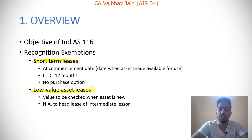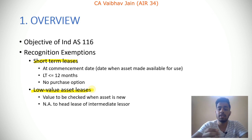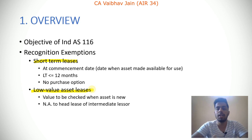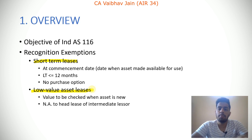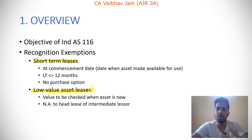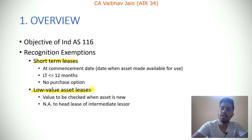The second exemption is for low-value asset leases. Here the lessee has to check whether the value of the asset — when new — is low, i.e., not significantly high. If so, the lessee can avail the exemption and need not follow Ind AS 116 recognition requirements. For example, if the lessee is taking laptops on lease, the value of the laptops may be merely 30,000 to 70,000. So it is a low-value asset lease and the lessee can avail the exemption.